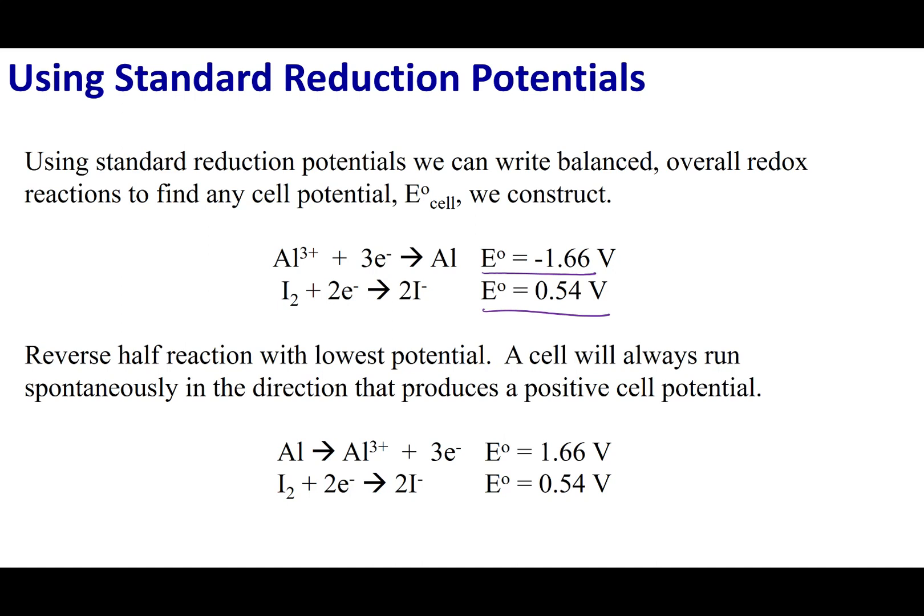Now, what you're going to do is reverse the lowest potential. Now, I'm going to explain in the next lecture why you're going to do this. But just rule of thumb, the one that's the lowest is the one that you want to reverse. So in this case, negative 1.66 is lower than 0.54. So I'm going to reverse that reaction. Now, the way that cell potentials work is if you reverse the reaction, you're going to have to reverse the potential. So now what I've done is instead of writing the aluminum reaction as a reduction, I've written as an oxidation. And because it's an oxidation, I'm going to make it plus 1.66 volts.